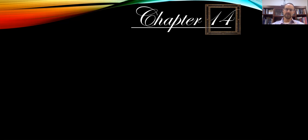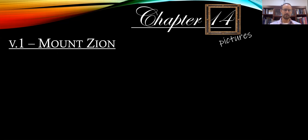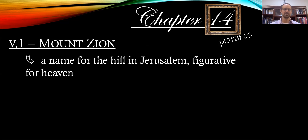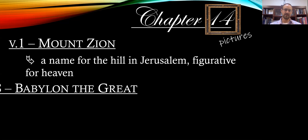Some pictures in Chapter 14 that you need to look out for. In verse 1, you have Mount Zion. Mount Zion is the name of the hill of Jerusalem on which the temple once sat. Mount Zion is oftentimes figurative for heaven — the place where God dwells, and he's going to dwell with his people forever.